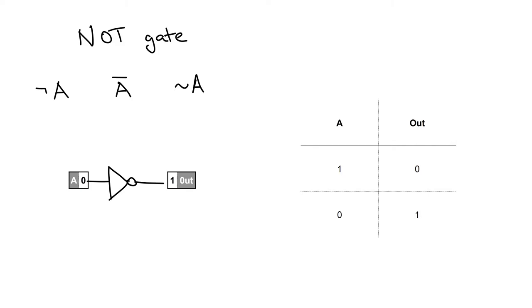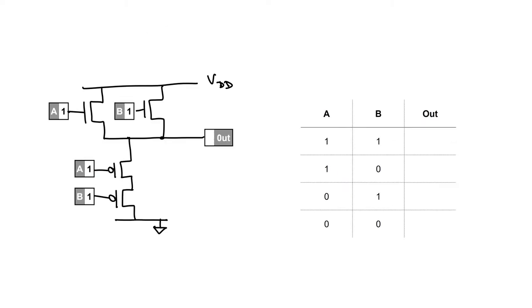Let's move on to our second gate, which is going to have two inputs. Here we've got VDD connected through two NMOS gates in parallel to our output pin, and then two PMOS MOSFETs in series down to ground. The truth table now has two columns for A and B, with rows for all possible combinations. Let's turn this to 1-1 first: the top two NMOS MOSFETs switch on, giving a conducting pathway to VDD through both of them, so we get a 1 at the output. The PMOSFETs at the bottom switch off, so there is no conducting pathway to ground.